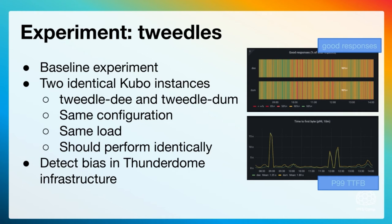The idea is we have two identical instances of Kubo with the exact same configuration and the same load — they should perform identically. That's our test to see whether there's any bias in the platform. On the whole, they do perform identically over the long term. But of course, this is a dynamic system, so each instance will have different peer lists and will catch different peers. In the very short term there are sometimes variations in performance, because requests that come in might be serviceable by one node that happens to be connected to a peer which already has the blocks, while another node has to go through the discovery process. So there are always slight variations, but on the whole things run identically.